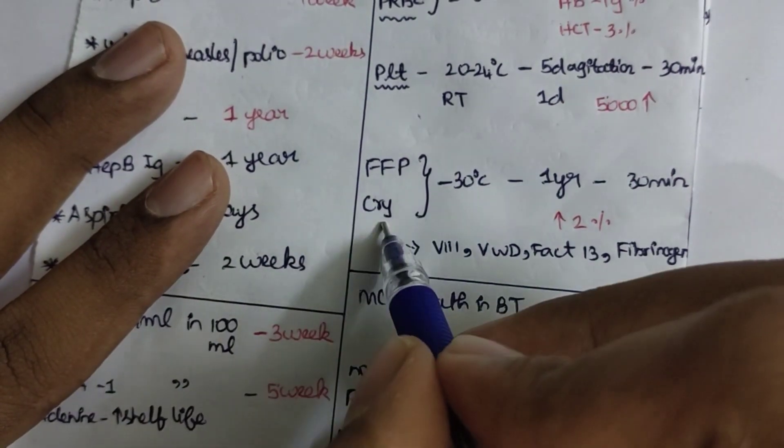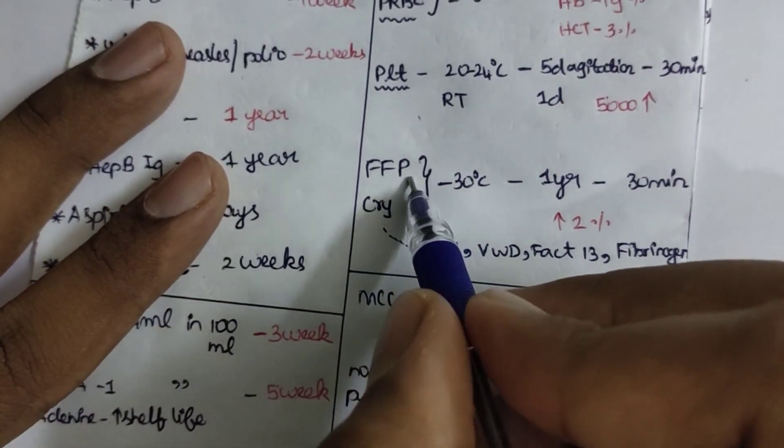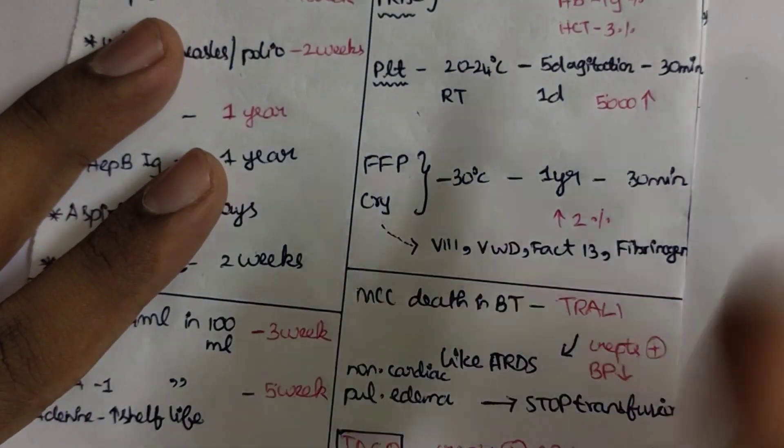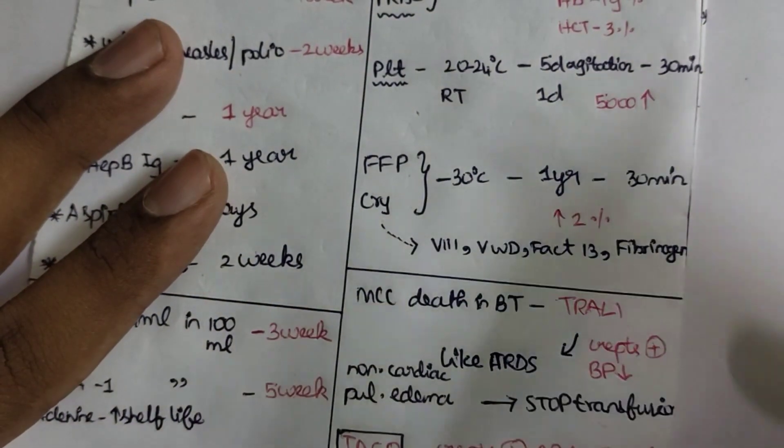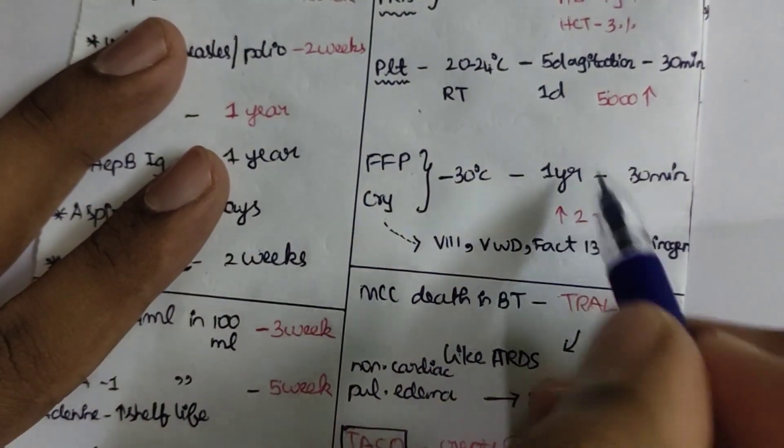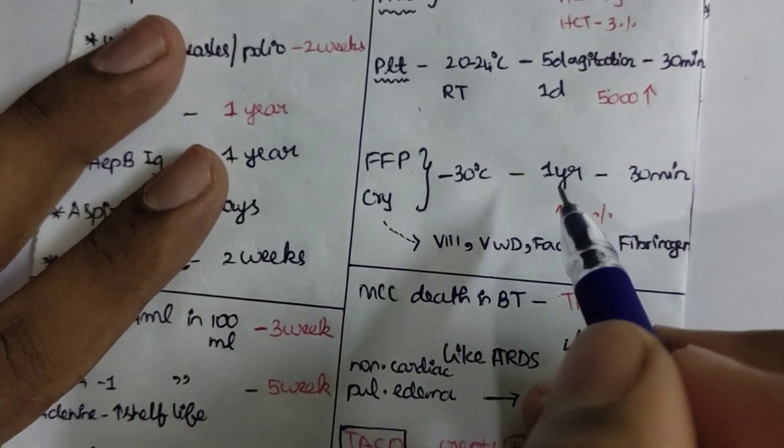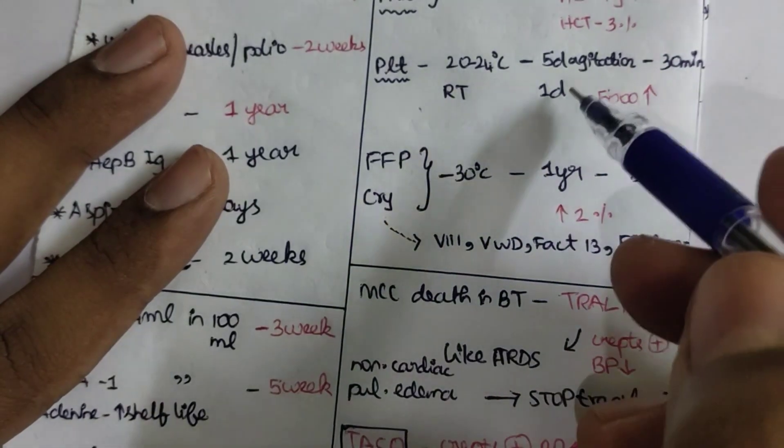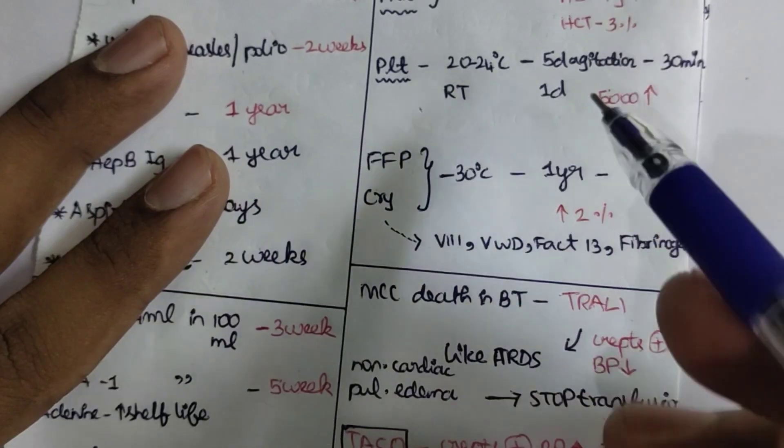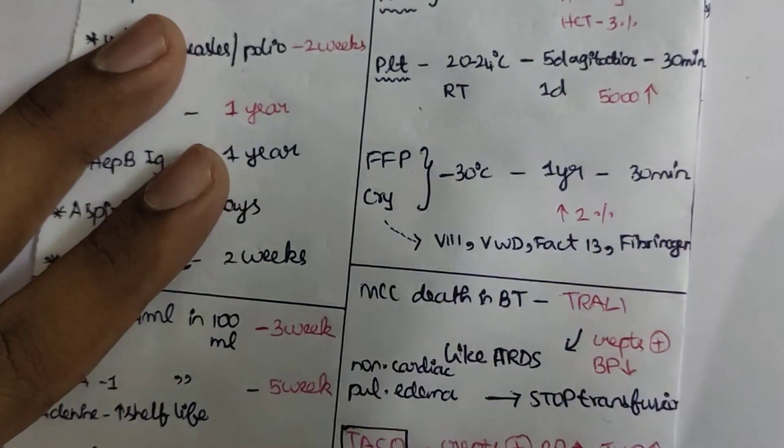Fresh frozen plasma and cryoprecipitate are frozen, so we have to maintain the temperature of about minus 30 degrees Celsius. It has a validity of one year. Both platelets, cryoprecipitate, and fresh frozen plasma have to be given to the patient within 30 minutes.